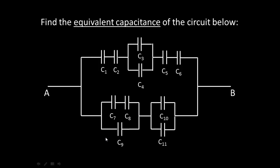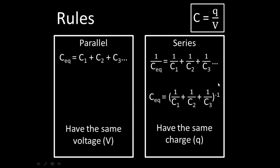Let's go ahead and assume that the potential difference between point A and point B is constant. Before we begin, let's go over some basic rules. For capacitors in parallel, to find the equivalent capacitance, we can just go ahead and add each individual capacitor. Notice that the equivalent capacitance for parallel capacitors will always be greater than each individual component. For capacitors in parallel, they have the same voltage V running through each capacitor.